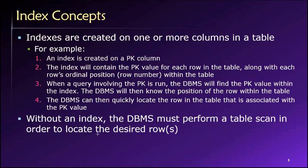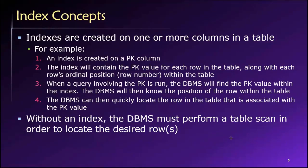As we saw illustrated several times, without an index, the DBMS has to perform a table scan in order to locate the row or rows that it's looking for. A table scan is just a naive search — start at the top and just look from one row to the next. If I'm looking for multiple rows, I'll potentially have to scan all the way to the bottom.